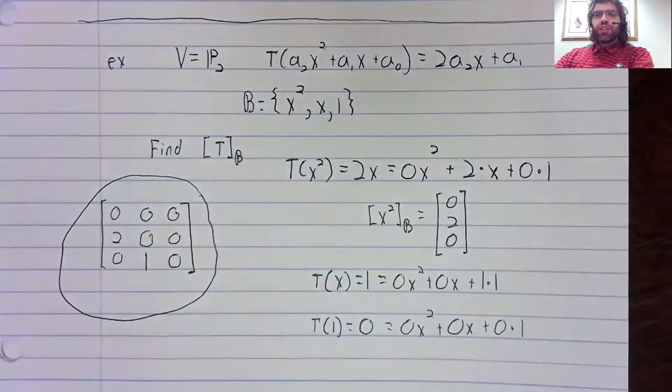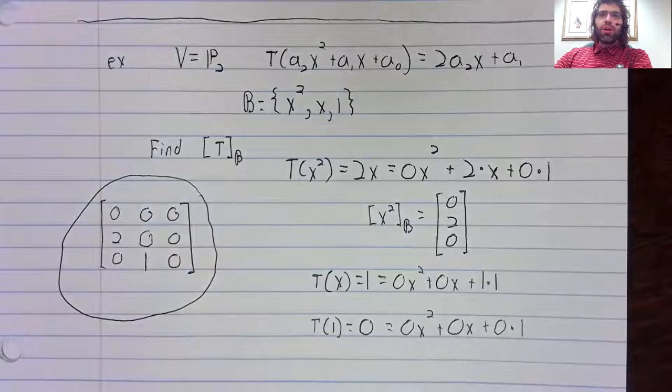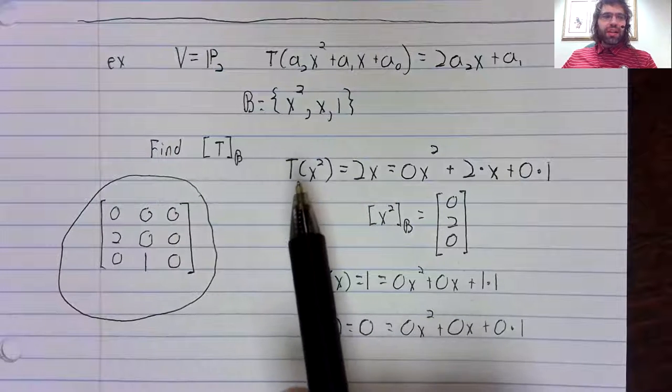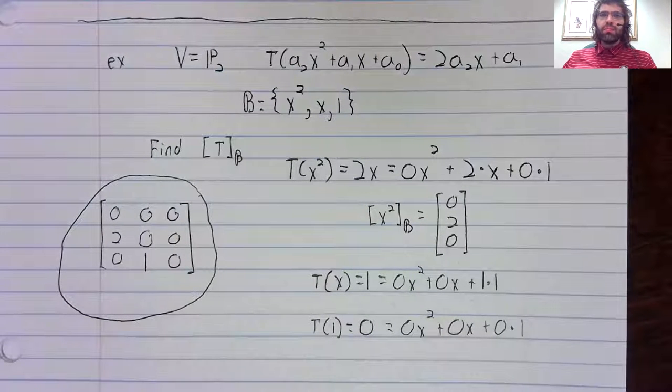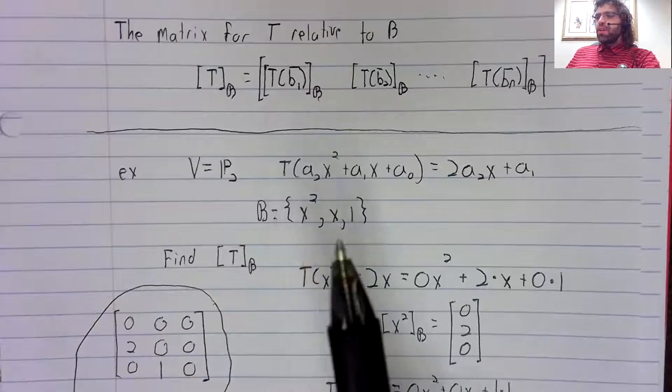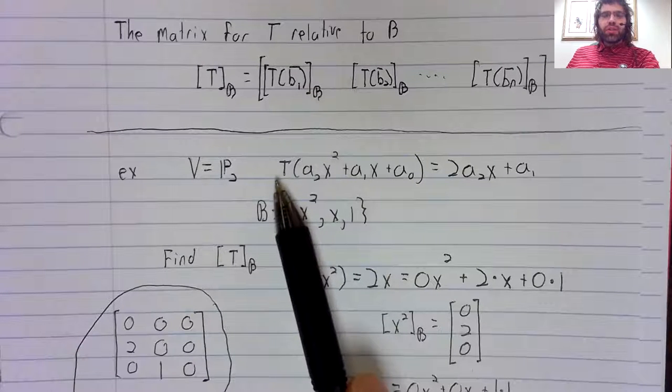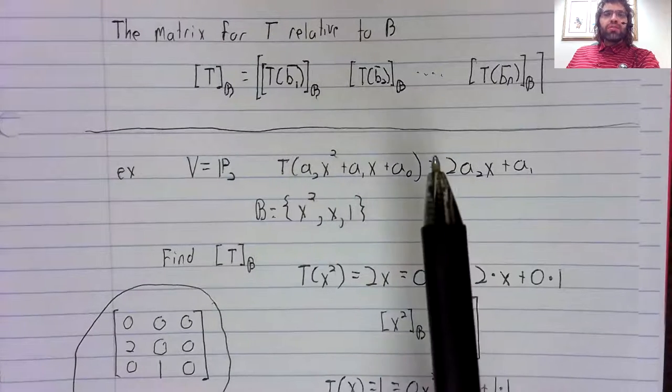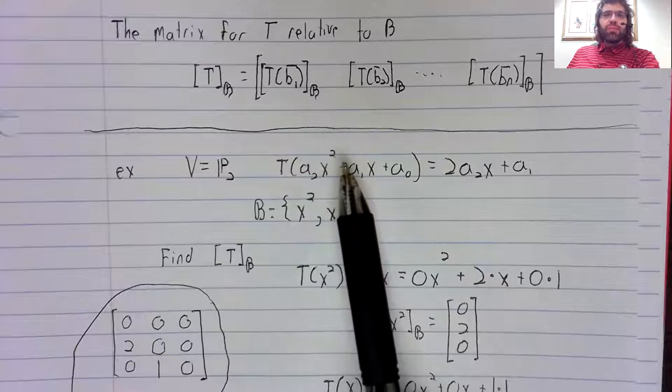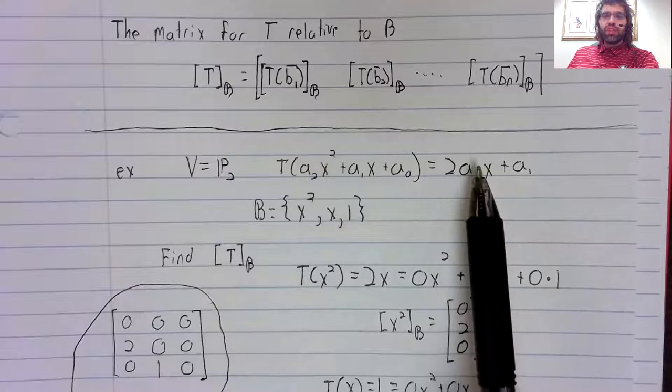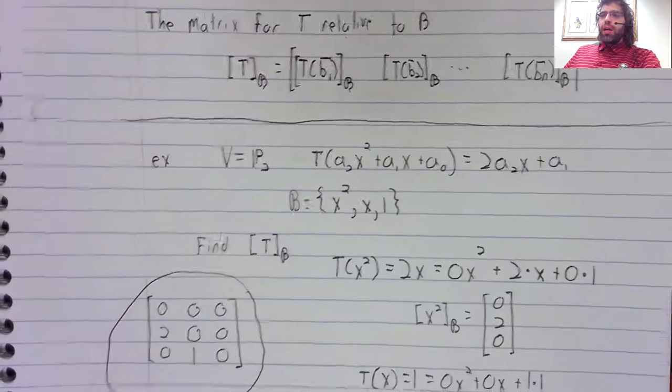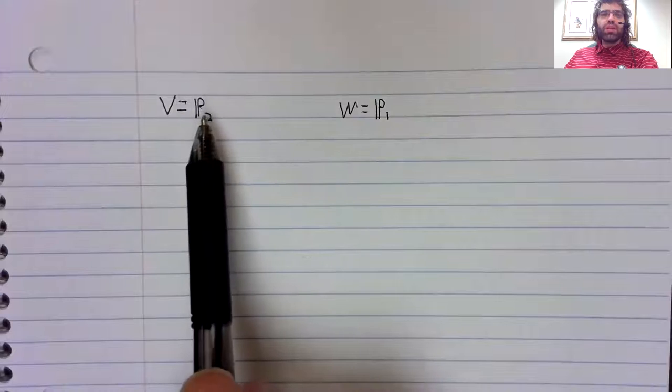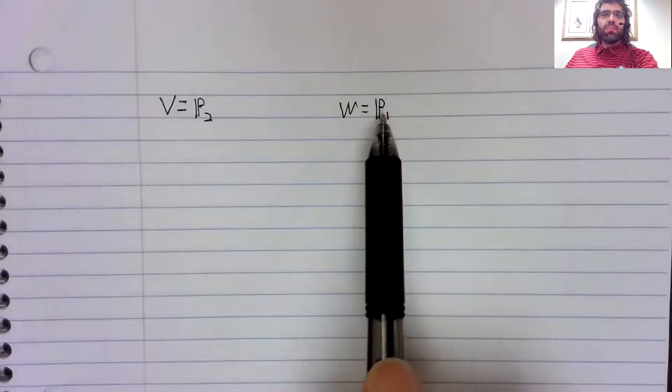And actually, at the risk of making this video a little long, let's now modify this example slightly. Here, I'm thinking of this as a transformation from P two to P two. But notice that the derivative of a second degree polynomial is a first degree polynomial. I could just as easily think of this as a transformation from P two to P one.